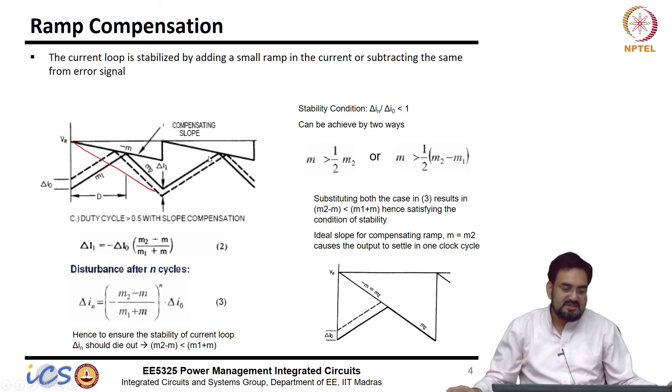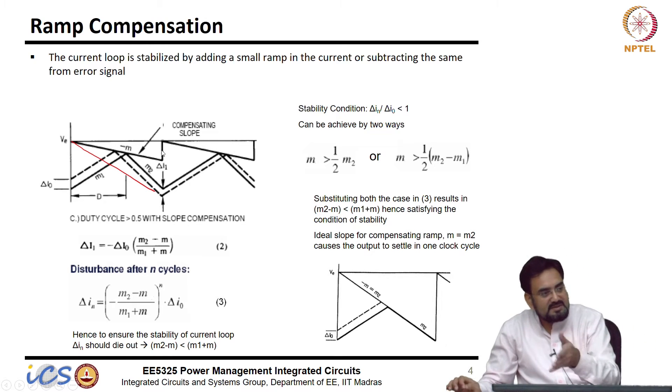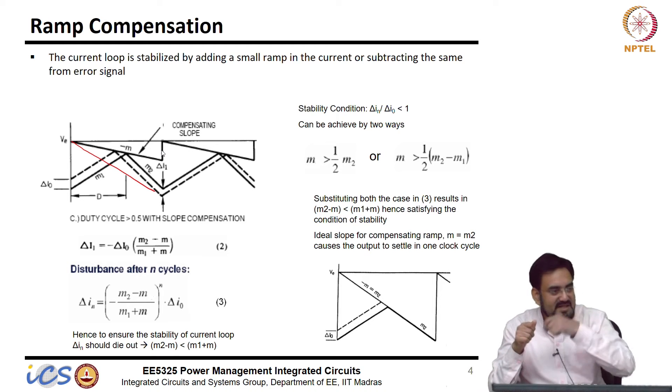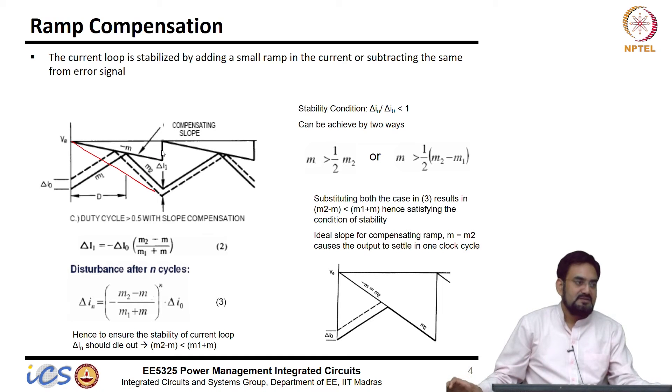So, the stronger you have this slope compensating slope, you move towards voltage mode control, then your complex pole will start coming into picture and your loop will become unstable.